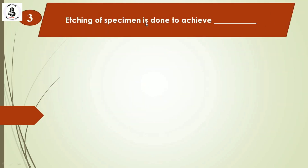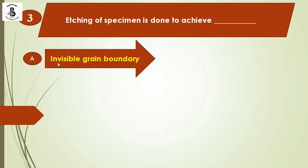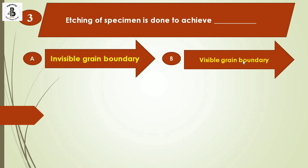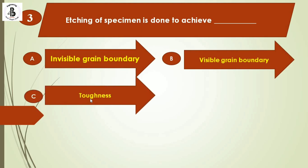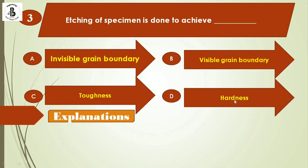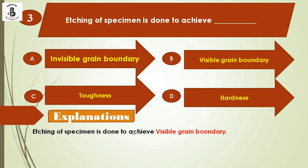Next question: Etching of a specimen is done to achieve — option A: invisible grain size; option B: visible grain boundaries; option C: toughness; option D: hardness. Etching of the specimen is done to achieve visible grain boundaries. It is the last step in microstructure examination. By the etching process, the grain boundaries present in the structure are corroded, making them visible. The right answer is option B.